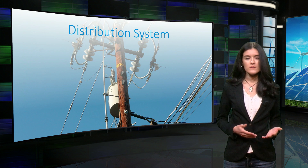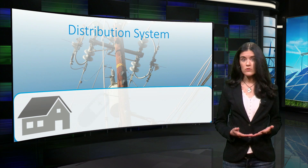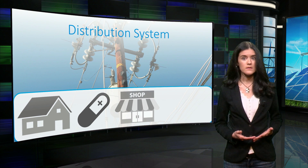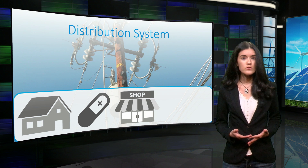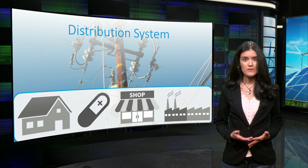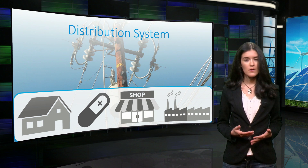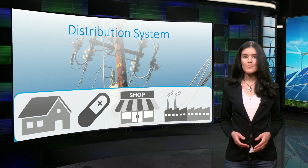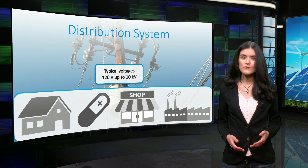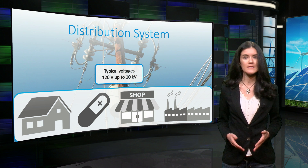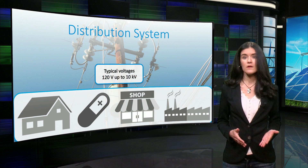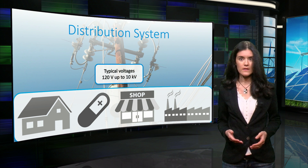The load contains households, hospitals, commercial buildings, and small to medium sized industries, among others. Typical voltage levels for the distribution system go from 120 V to 10 kV.